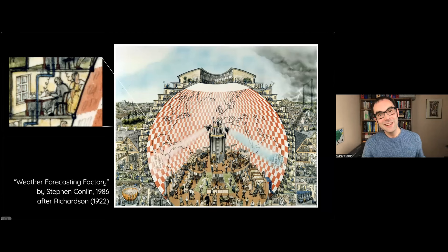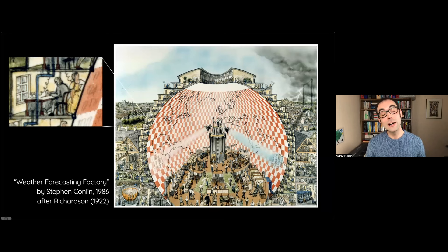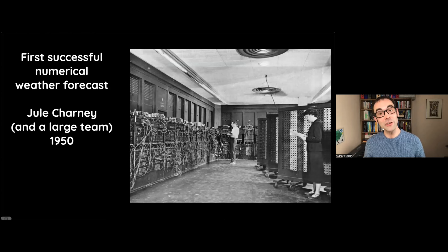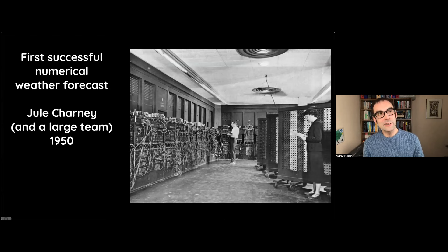Of course simulations don't work quite like that — they work with digital computers — but actually many of the principles Richardson wrote about, about how you can discretize the partial differential equations and solve them numerically, are still leaned on today. The first example of something like a hydrodynamical simulation of this sort was actually performed on the ENIAC computer by a meteorologist and a large team in the 1950s, and this lays a lot of the foundations for the way we think about hydrodynamical simulations today. There's a definite strong connection between the way this was pushed forward for weather forecasting and what we're doing in cosmology.